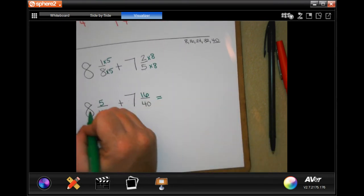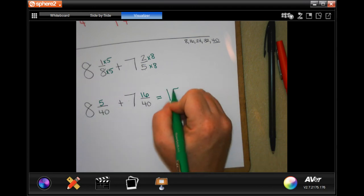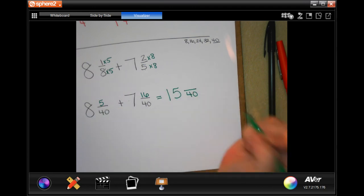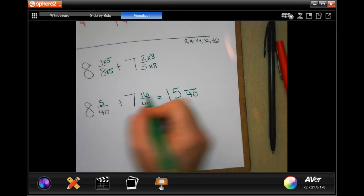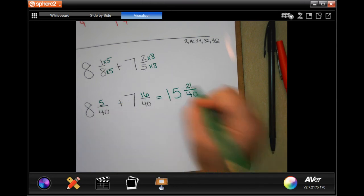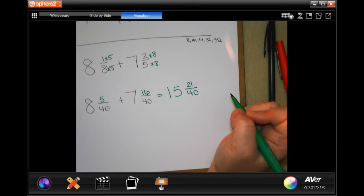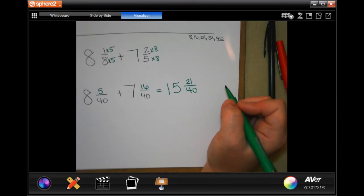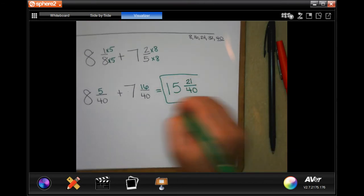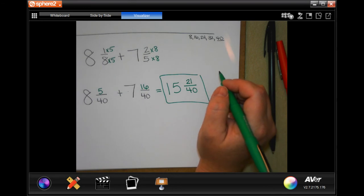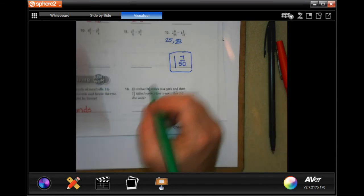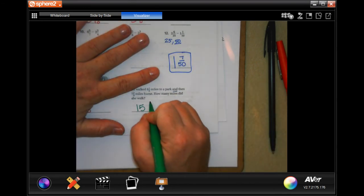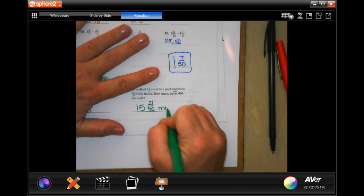So now 8 plus 7 is 15. My denominator is going to be 40. 5 plus 16 is 21. 21 and 40 are not divisible by anything in common. So that is your answer, and it's going to be in miles. So 15 and 21 over 40 miles.